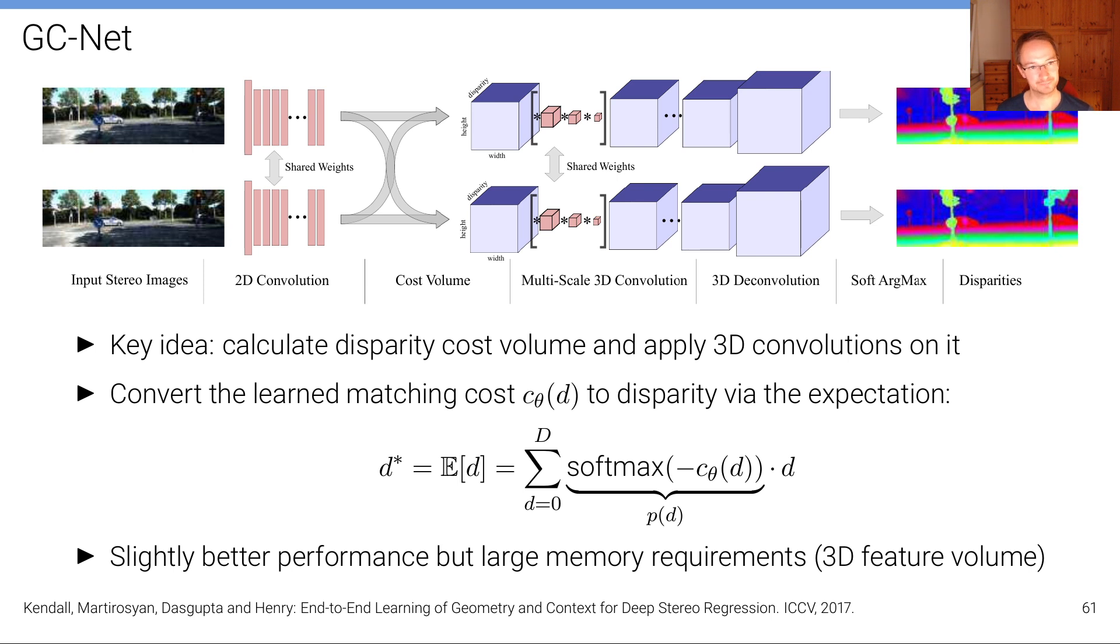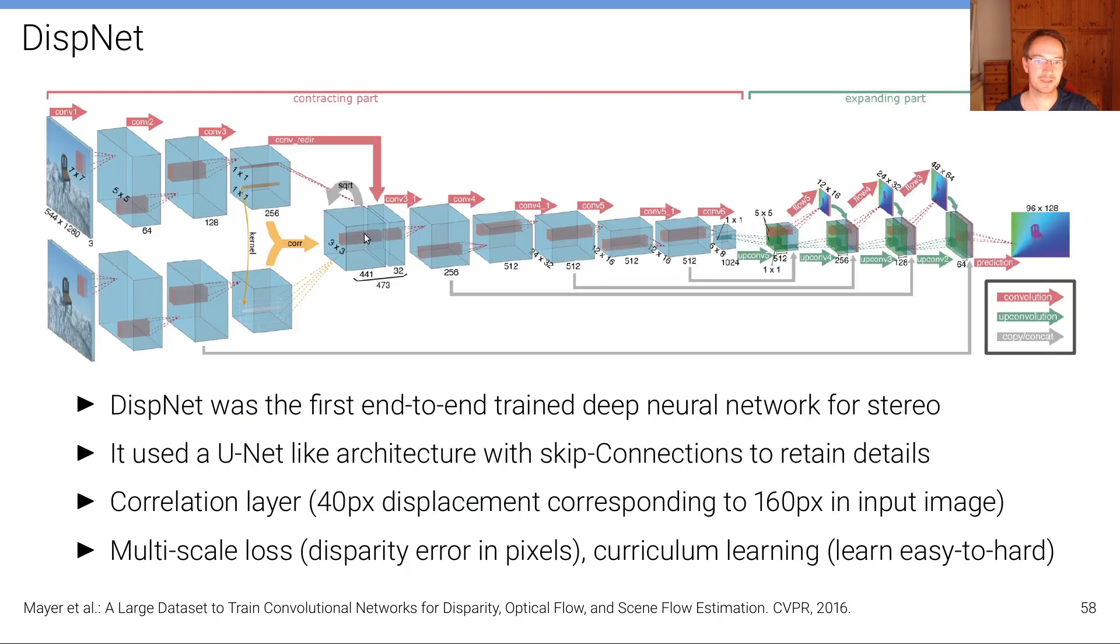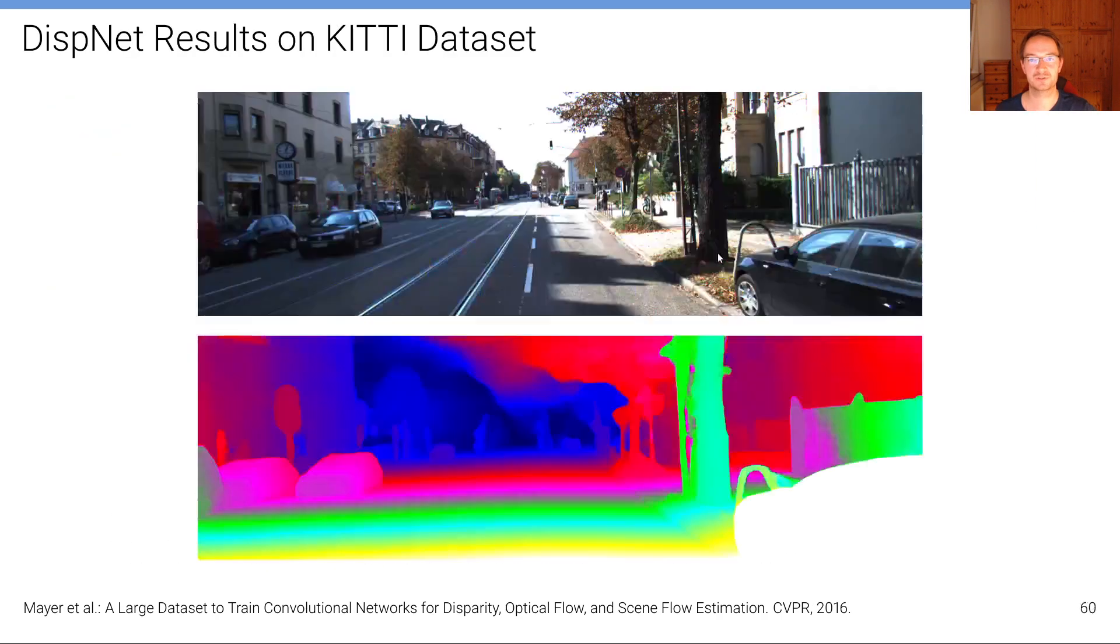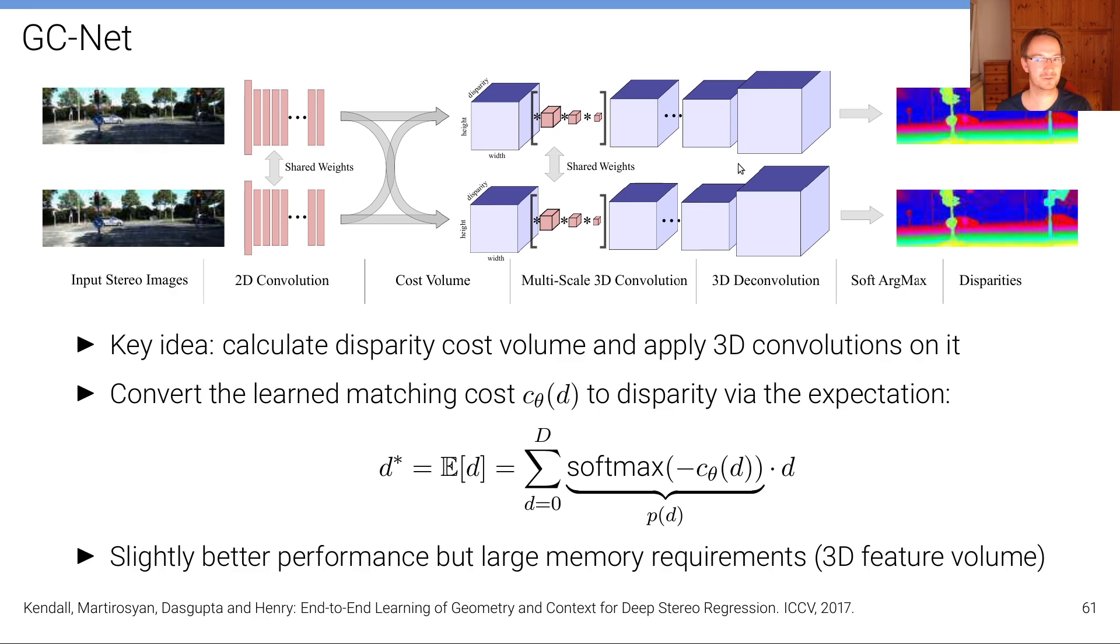A follow-up work is called GC-Net that led to even better performance than DispNet by utilizing a very simple idea. What has been done differently in this model while also using a shared 2D convolutional encoder was that now the cost volume that was created by correlation and in this case both for the left and for the right image as reference image